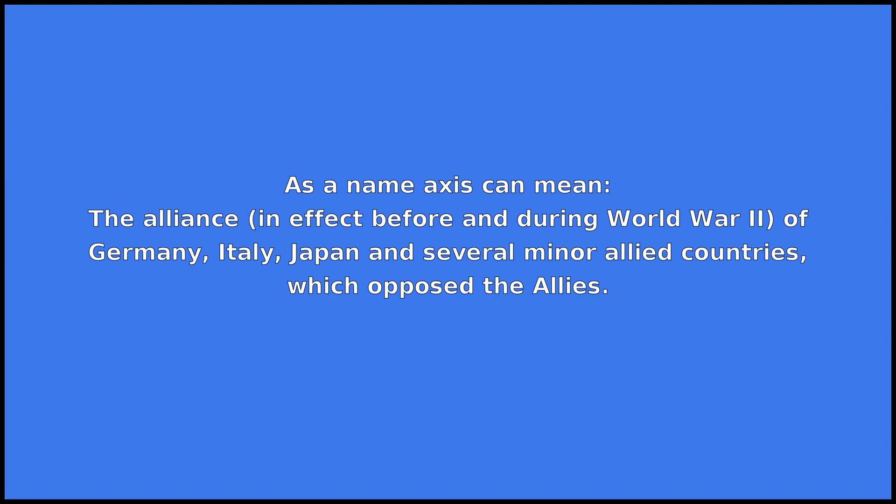As a name Axis can mean: The alliance, in effect before and during World War II, of Germany, Italy, Japan and several minor allied countries, which opposed the allies.